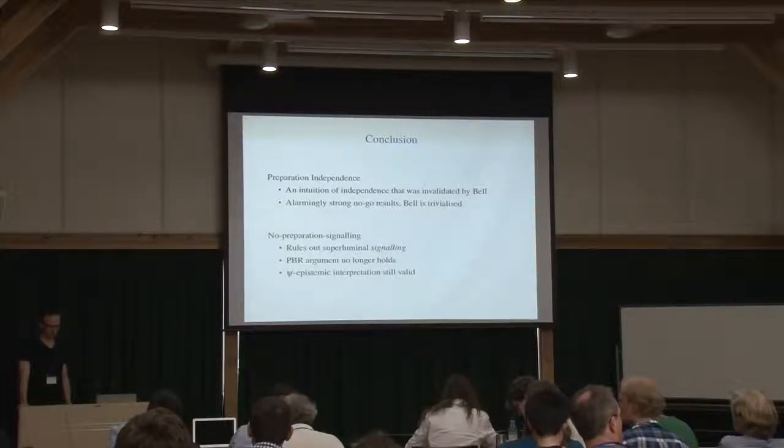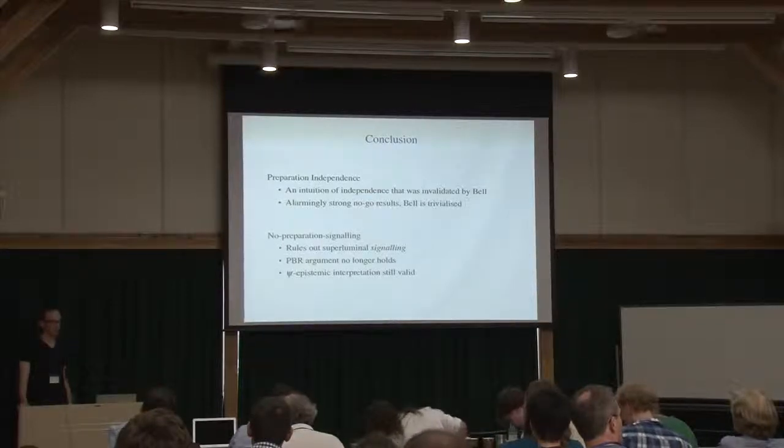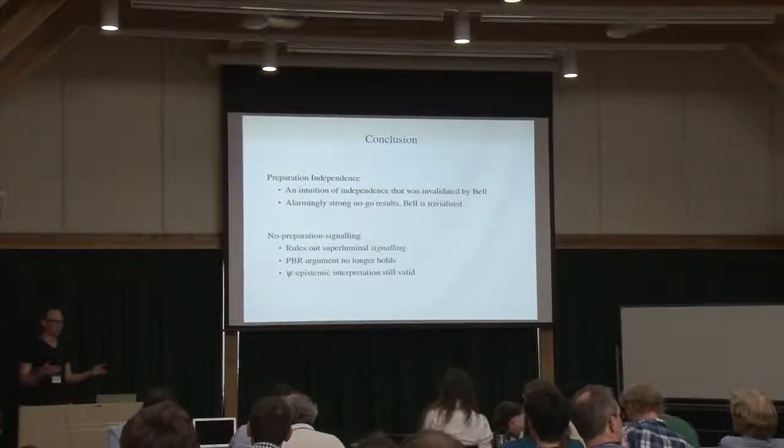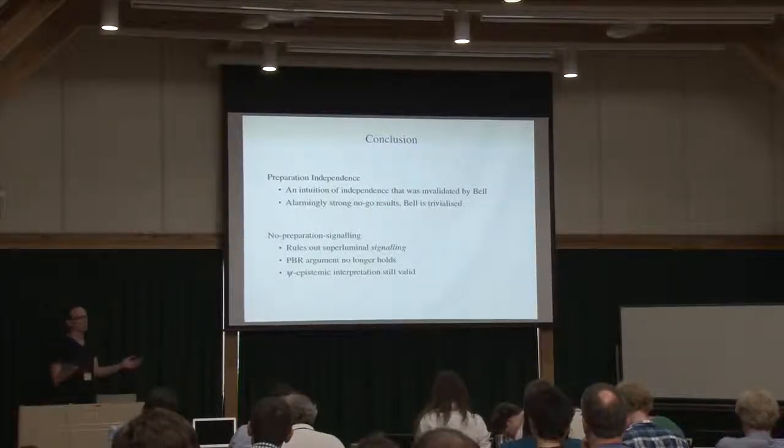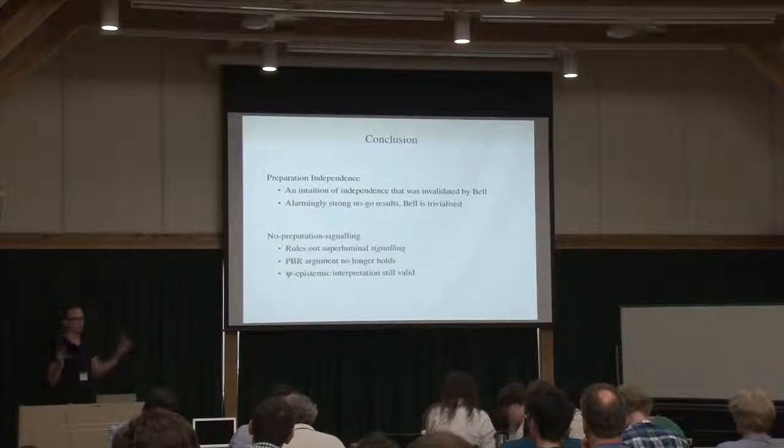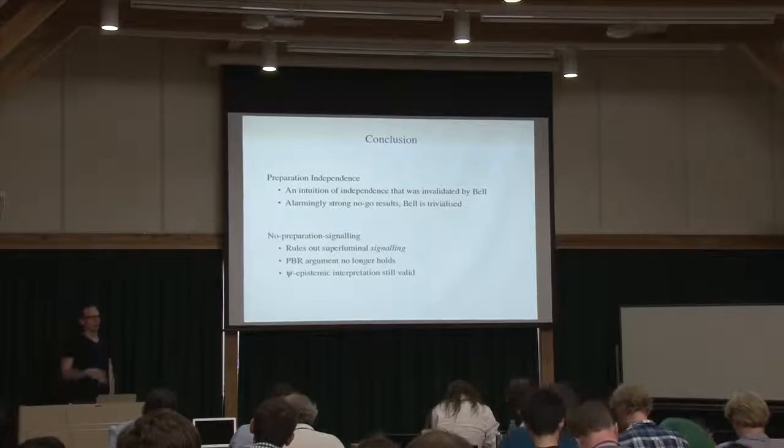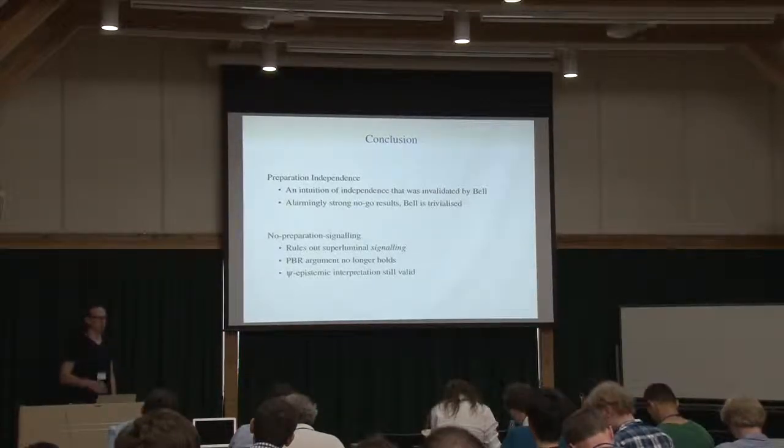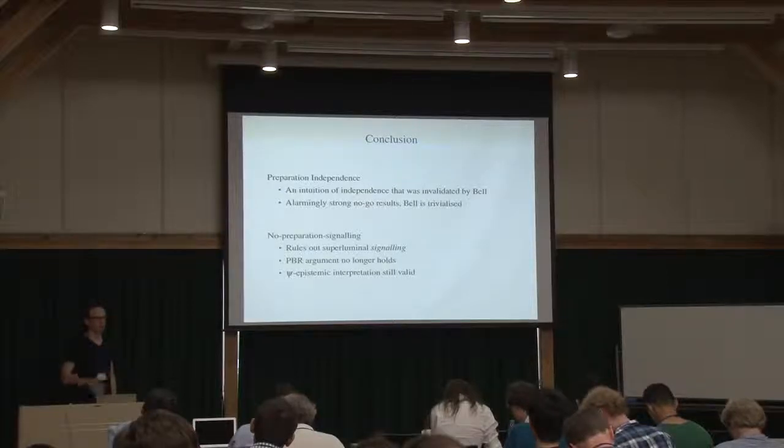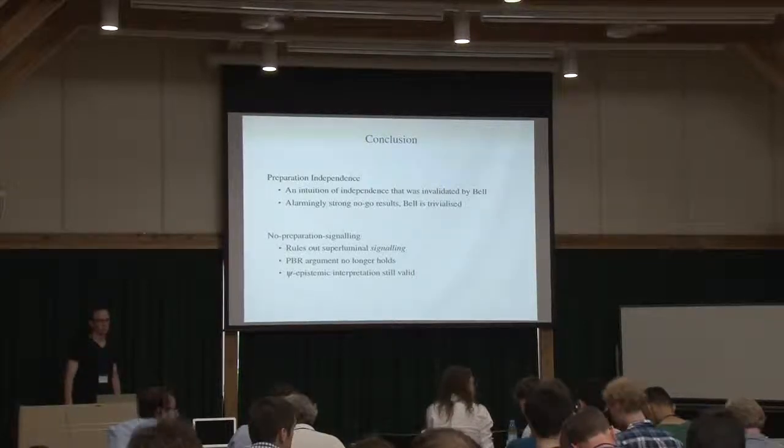So if you accept preparation independence, then we know that quantum mechanics must be psi-ontic. If the theory is psi-ontic, then just the presence of steering is enough to show that we violate Bell's locality. So I mean, you don't even have to go through Bell's theorem. It's something like a double standard, probably. Do you have more questions?